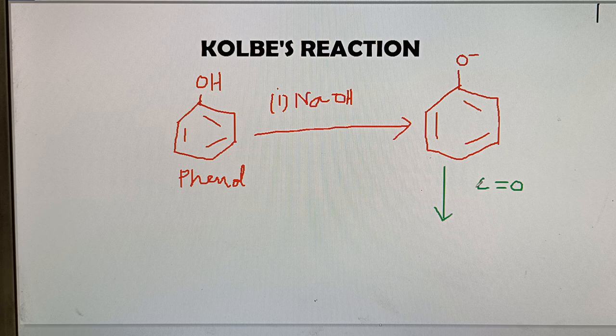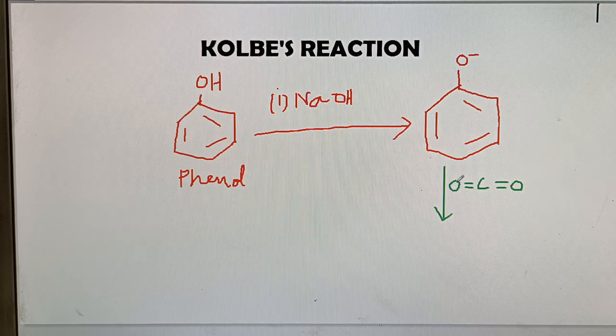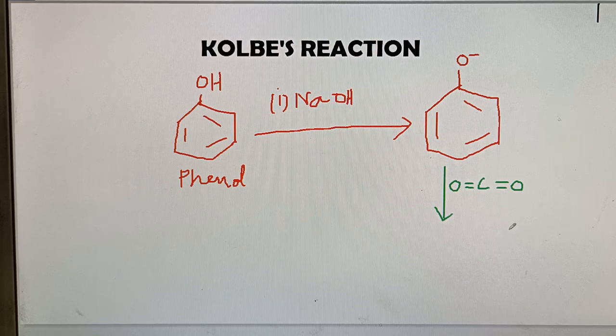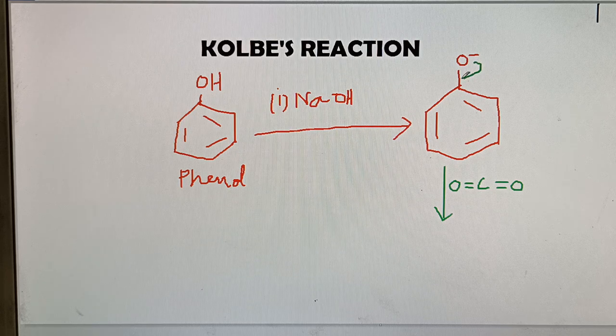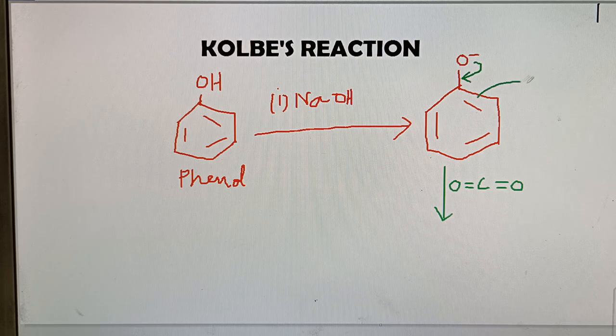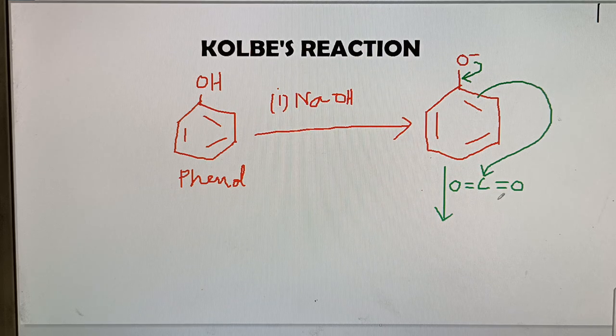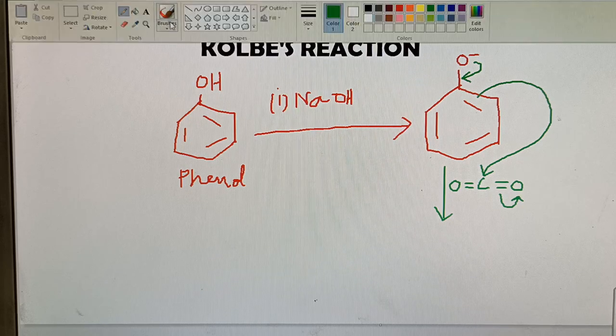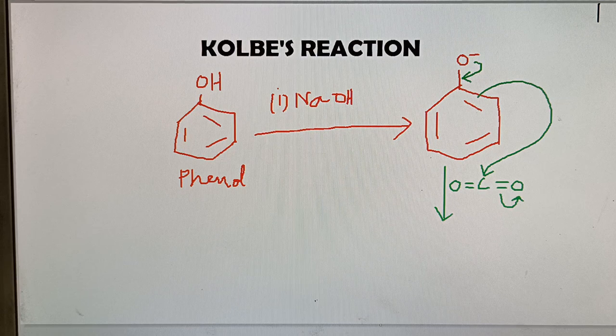We know the structure of carbon dioxide, linear structure, where this carbon atom is sp-hybridized. Now, this will attack in this way. This from its ortho position. After that, this kind of intermediate is formed.